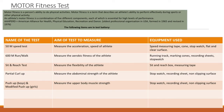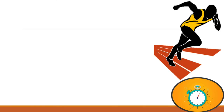AAHPERD stands for American Alliance for Health, Physical Education, Recreation, and Dance. It is the oldest professional organization in the USA, formed in 1965 and revised in 1976. The following items are in the test battery.